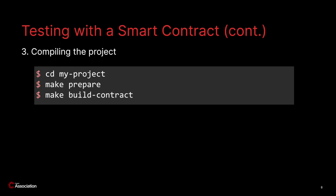So now that we have a starter project, we can compile the smart contract. Inside the newly created MyProject folder you will find two folders: contract and tests. Let's focus on the contract for now. We need to build the project. In order to do that we have to go into the folder and install the Rust toolchain and specify the target build as WebAssembly.